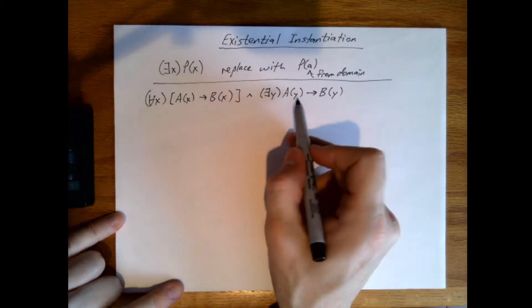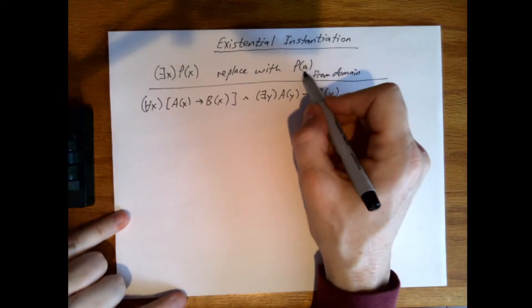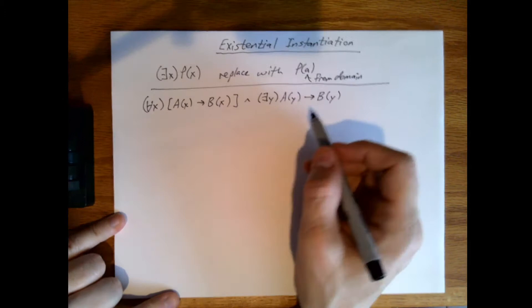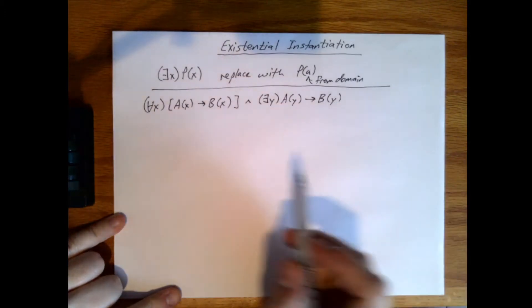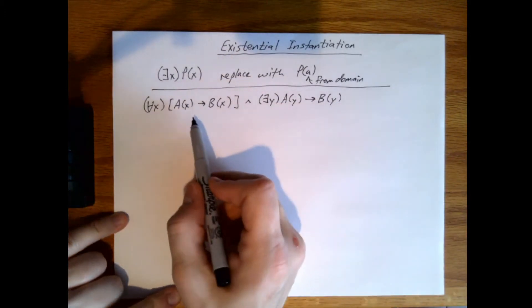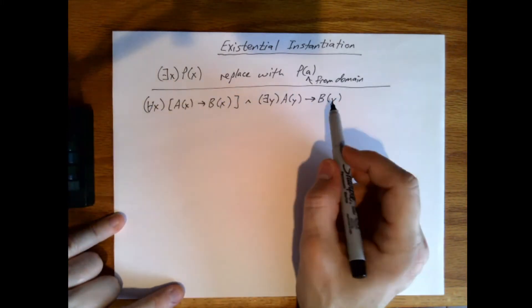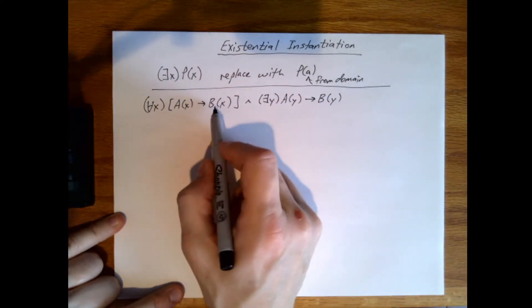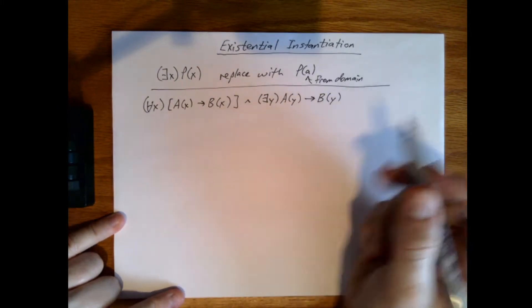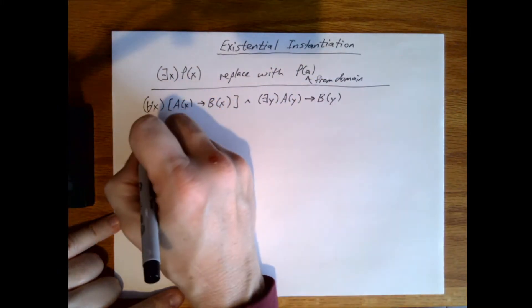So here's the universal quantifier. Now X is a dummy variable, Y is a dummy variable. This A here was a constant that comes from the domain. So what does this look like here? If we didn't have the quantifiers, this should look like something I'd use with modus ponens. A implies B and A allows me to derive B. So that's really what we're getting at here.